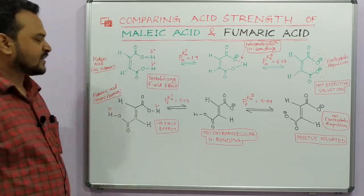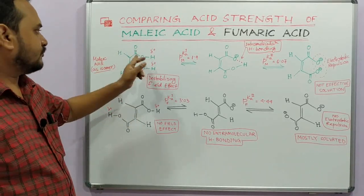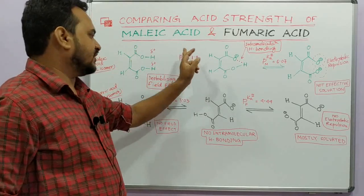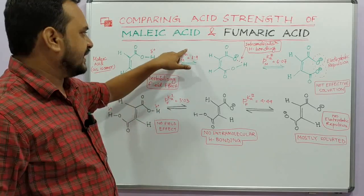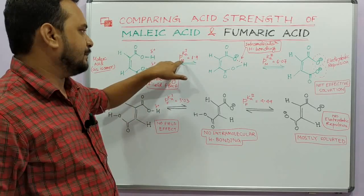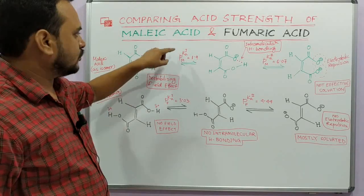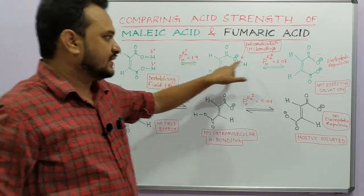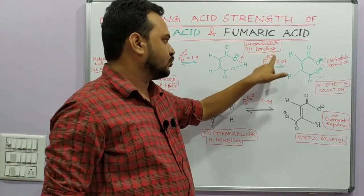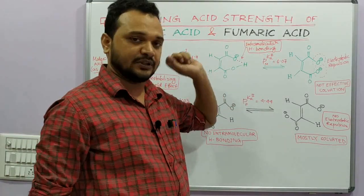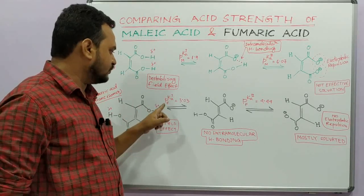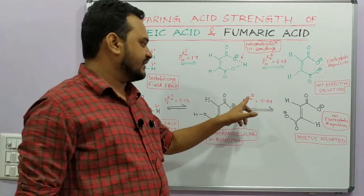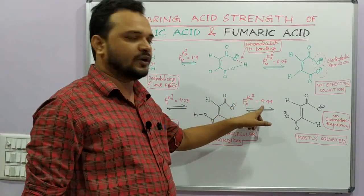So it is the cis isomer, and in fumaric acid the two COOH groups are on opposite sides whereas the two hydrogens are also on opposite sides — they are simply geometrical isomers. For the first dissociation of the carboxyl hydrogen we get the first pKa value: pKa₁ for maleic acid is 1.9 and pKa₂ for maleic acid is 6.07.